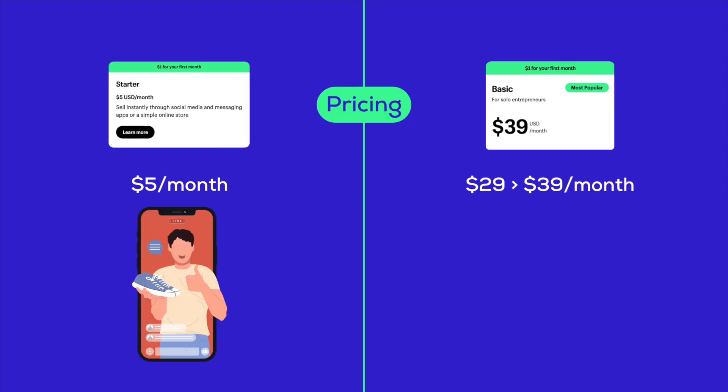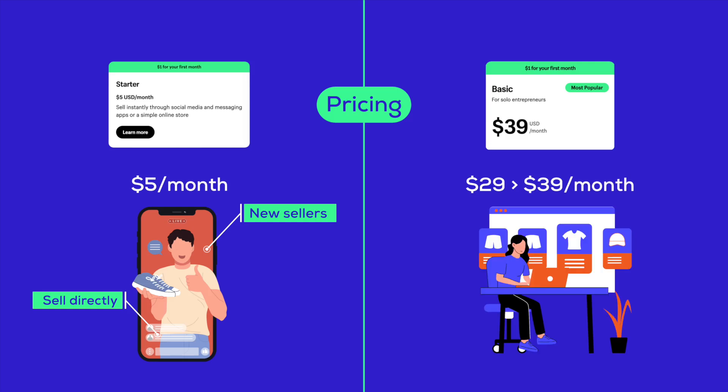The Starter plan is ideal for new sellers targeting customers on social media. You can easily create product links, share them directly in your posts or messages, and start selling without the hassle of a full store — perfect for entrepreneurs eager to jumpstart their business. The Basic plan is perfect for small businesses that are ready to build a full online store, offering unlimited product listings and the ability to sell on multiple channels like online marketplaces and social media.